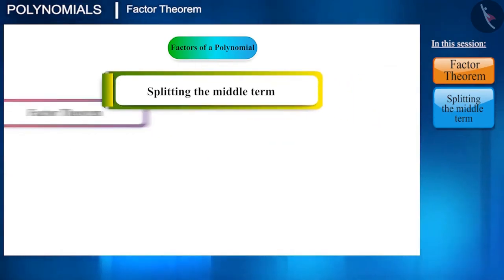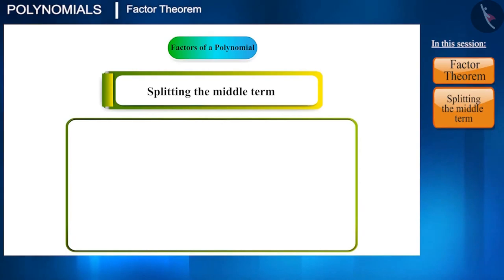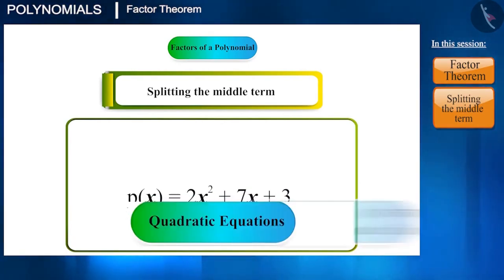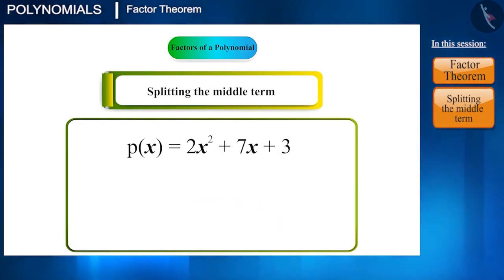Now, let's solve this polynomial using the method of splitting the middle term and see if their results are the same or not. Friends, we have learnt this method in the context of quadratic equations in our previous session. As you all know, here we will multiply the coefficient of x², that is 2, and the constant 3 to get 6.